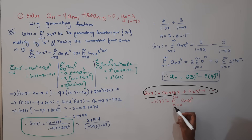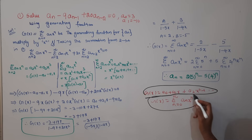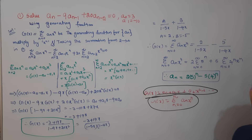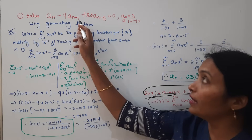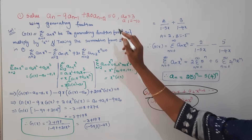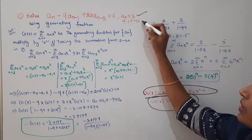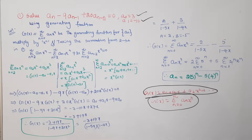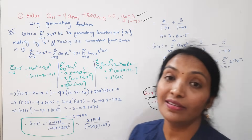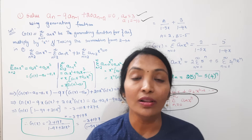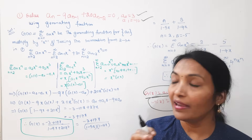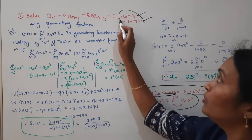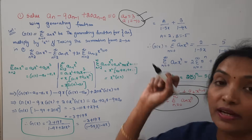We can write it as: n starts from 0 to infinite. This is the generating function — this is a₀. The problem is: aₙ minus... a₀ is 3 and a₁ is minus 10. This is the generating function, used to solve the recurrence relation. All the initial conditions will be handled by the generating function.